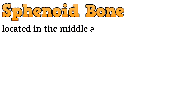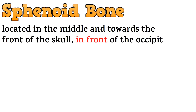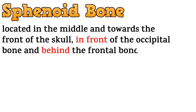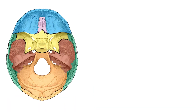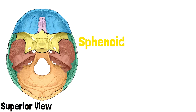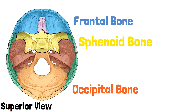Let's start with some general information about the bone. The sphenoid bone, also known as the wasp bone, is located in the middle and towards the front of the skull, in front of the occipital bone and behind the frontal bone. It is said to be butterfly shaped. This is the superior view of the base of the skull. The bone shaded in yellow is the sphenoid bone, the blue shaded bone is the frontal bone, and the orange shaded bone is the occipital bone.